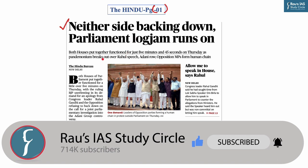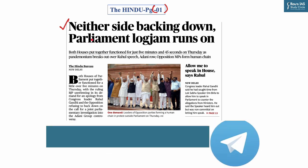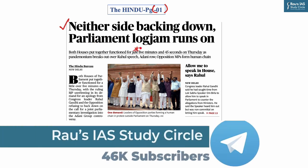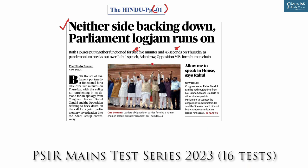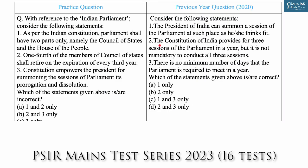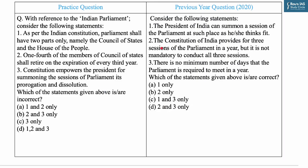According to this news, both houses — Lok Sabha and Rajya Sabha put together — functioned for just five minutes and 45 seconds. This deadlock is due to the Adani row, for which main opposition parties are demanding a debate and accusing the ruling party of denying proper time. Topics of Parliament, its features, regulations and procedures are very important from the perspective of the UPSC examination, as in 2020 UPSC asked questions based on various important features and procedures related to Parliament.